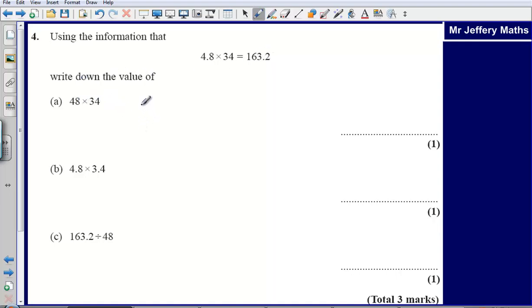Now a common thing to do here, maybe mistakenly, is to actually try to work this out from scratch. We're not being asked to do that, we're being asked to use this here to infer our answer to these questions. So the first thing to note is that basically these digits here, 4.8 × 34, are using the same digits in this sum here.